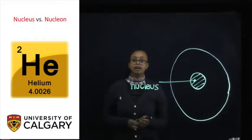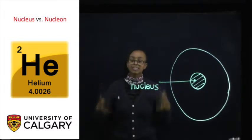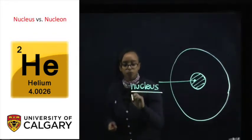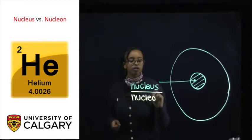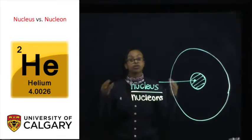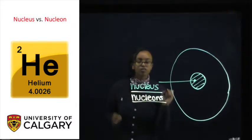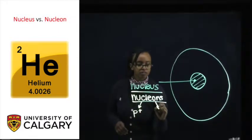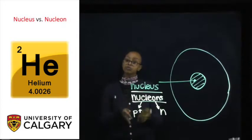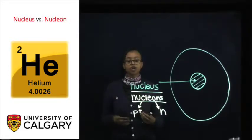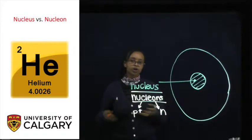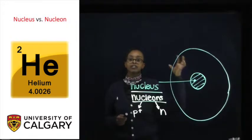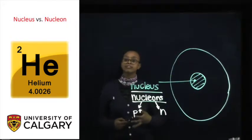The nucleus of an atom is where we find the entire mass of the atom. And this nucleus is where we find what we call nucleons. Nucleons is the word encompassing both protons and neutrons. Protons are particles with positive charge, and neutrons are ones with no charge — neutral charge. This densely packed nucleus is where we find the mass of an entire atom.